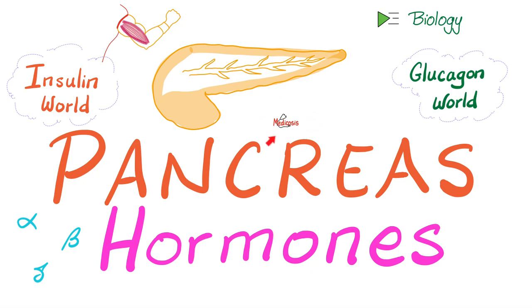Metacosis Perfectionalis is back. Let's talk about the endocrine pancreas, or the hormones secreted by the pancreas: insulin, glucagon, and somatostatin.